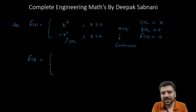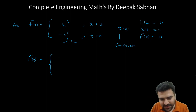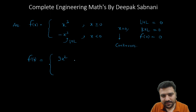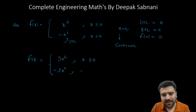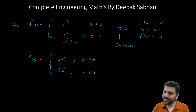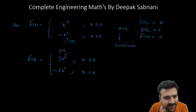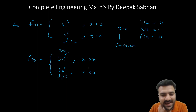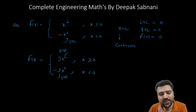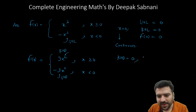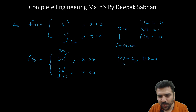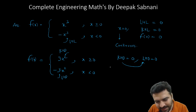Since f(x) is continuous, we differentiate directly: f'(x) = 3x² when x > 0 and f'(x) = -3x² when x < 0. Now we check differentiability at x = 0. The right-hand derivative is 3(0)² = 0 and the left-hand derivative is -3(0)² = 0. Both are equal, so f(x) is differentiable — once differentiable. So option 'once differentiable but not twice' is wrong so far.